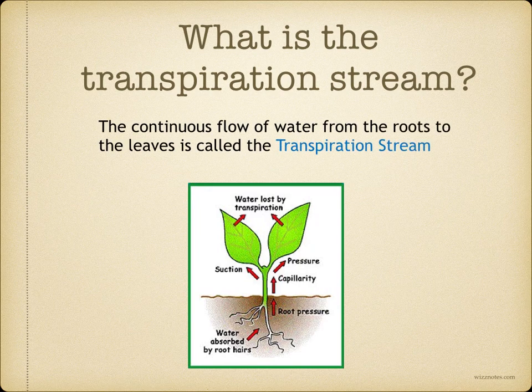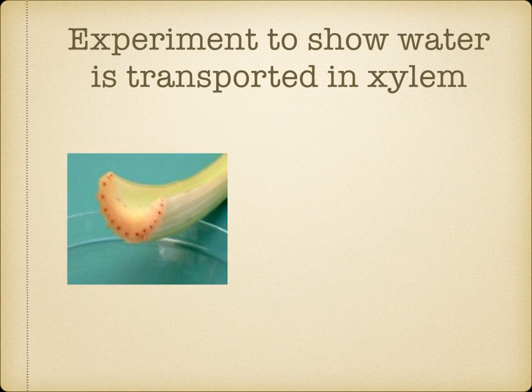We discussed the transpiration pull, so what is the transpiration stream? This is the continuous flow of water from the roots to the leaves. We call this the transpiration stream.